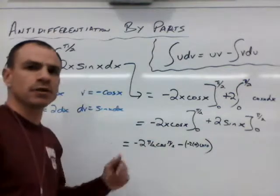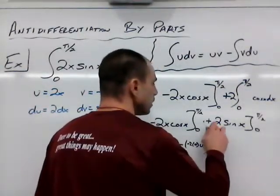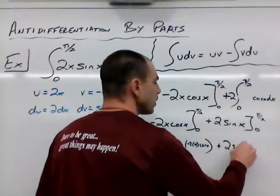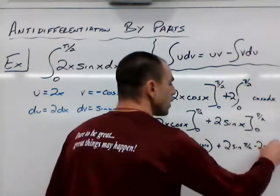And then now we plug in 0, so negative 2 times 0, and then the cosine of 0. Okay, that's a lot going on there. Just bear with me for a second. All right, plus.